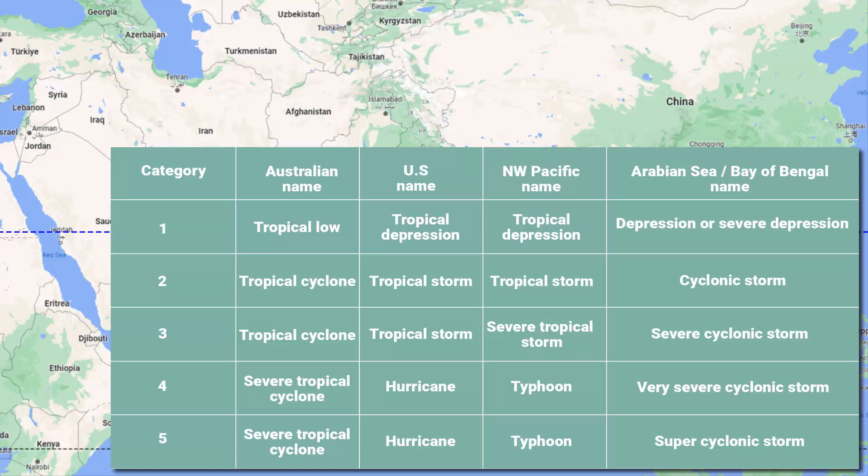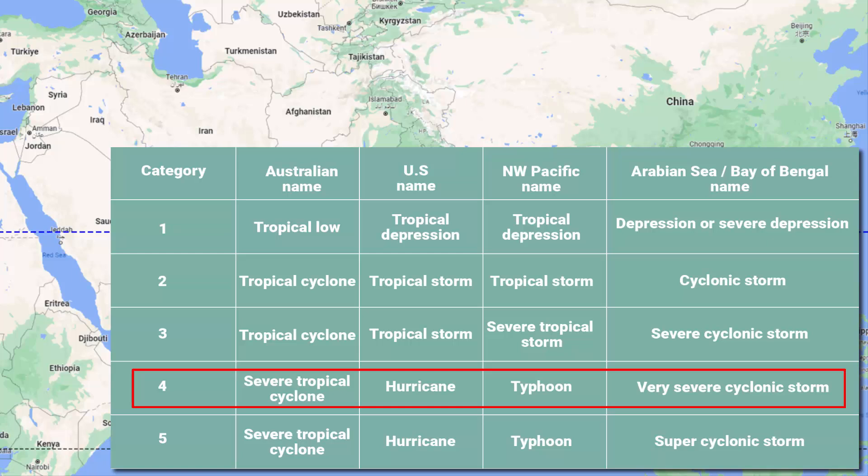As you know, cyclones have been segregated into five categories. According to the Indian Meteorological Department, this cyclone has been classified as a very severe cyclonic storm. If this cyclone were to occur in different regions around the world, it would be referred to by various names such as tropical cyclone, hurricane, typhoon and so on, depending on specific regions' naming conventions.